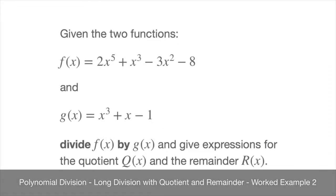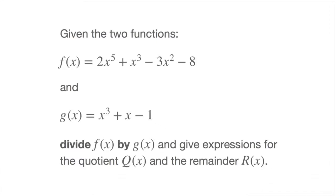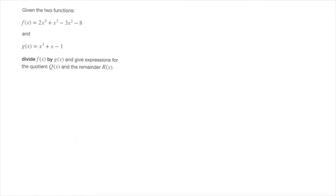In this tutorial we work through a second example in which we divide one polynomial function by another. We're asked to divide f(x), which is 2x⁵ + x³ − 3x² − 8, by g(x), which is x³ + x − 1. We need to give expressions for both the quotient function q(x) and the remainder function r(x).